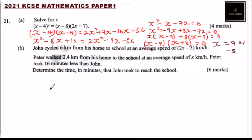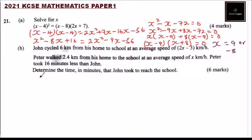Part B: John cycled 6 kilometers from home to school at an average speed of (2x minus 3) kilometers per hour. Peter walked 2.4 kilometers from home to school at an average speed of x kilometers per hour. Peter took 16 minutes less than John. We need to find the time in minutes that John took to reach the school.